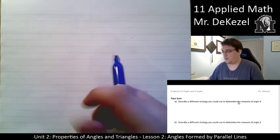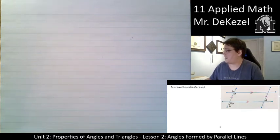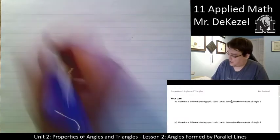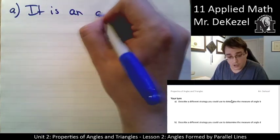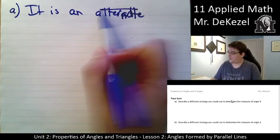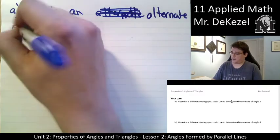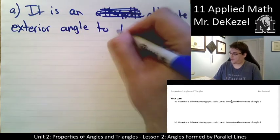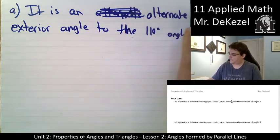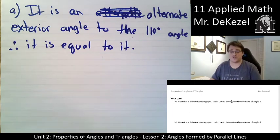For part A, we are going to describe a different strategy we could use to determine the measure of angle B. Angle B was also an alternate exterior angle to 110 degrees. This is the transversal and these are the parallel lines. It is an alternate exterior angle to the 110 degree angle. Therefore, it is equal to it. That is another strategy we could have used to find the measure of angle B.